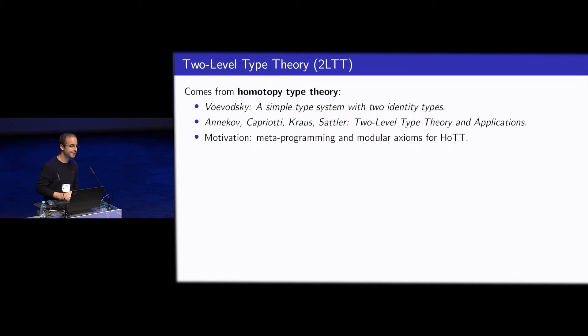So the title says applications, but staged compilation is not mentioned at all. All of the applications are in homotopy theory and category theory. But interestingly, it turns out that the system is quite directly applicable to two-stage compilation. So I think this is a good example for like a cross-pollination of very distant fields.